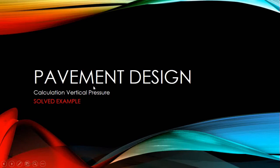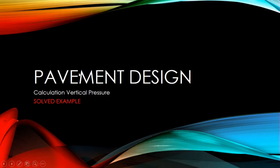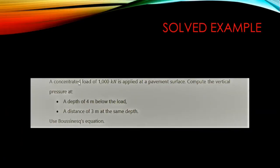Today I'm going to share something on pavement design — specifically the calculation of vertical pressure. The question is: a concentrated load of 1000 kilonewtons is applied at the pavement surface. We're going to compute the vertical pressure at a depth of four meters below the load, and also the pressure at a horizontal distance of three meters at the same depth of four meters. We'll use Boussinesq's equation.